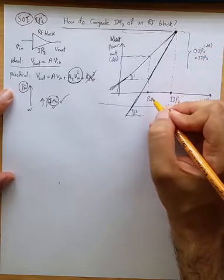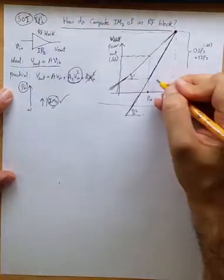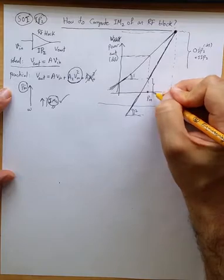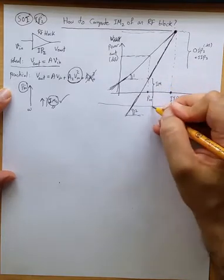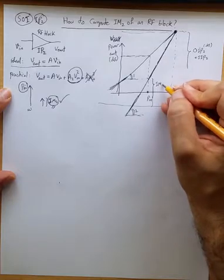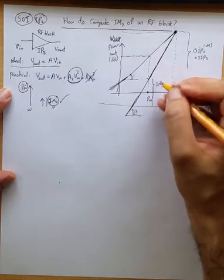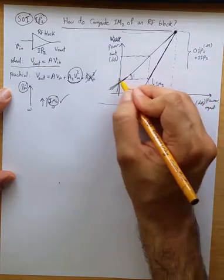Alright so now the thing is if we apply P_in there is this intercept point intermod product of second order that we want to see what its value is.